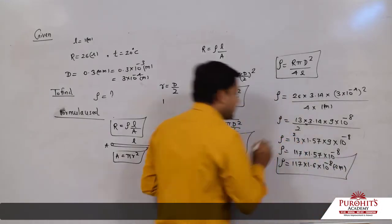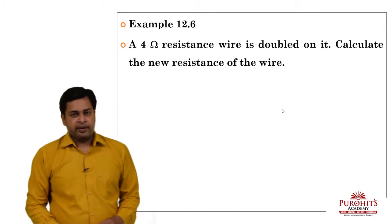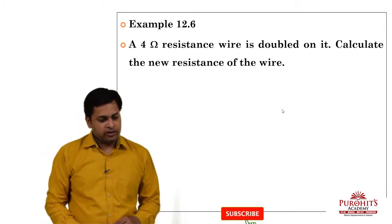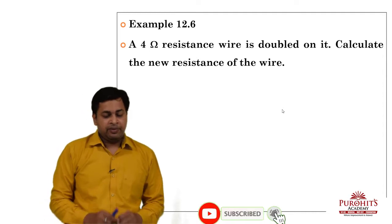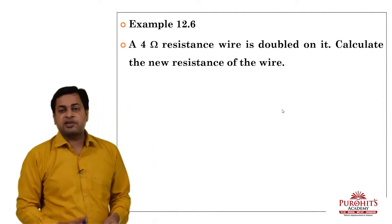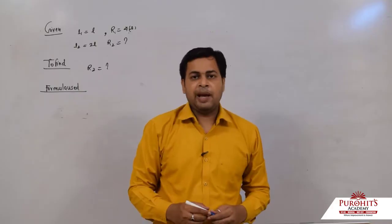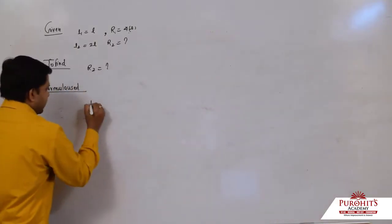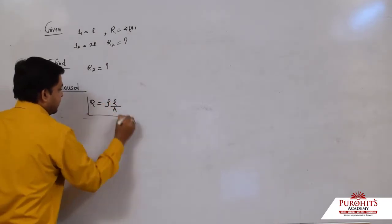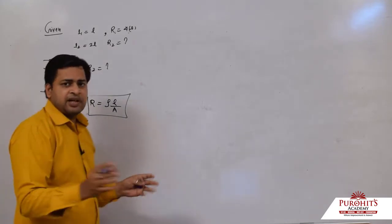Now Example 12.6: A 4 Ω resistance wire is doubled in length. Calculate the new resistance of the wire. The length of the wire is doubled — find the new resistance. Let us go to the board. We know the resistance formula R = ρl/A.